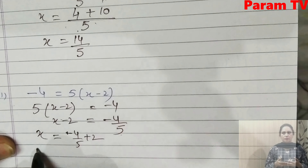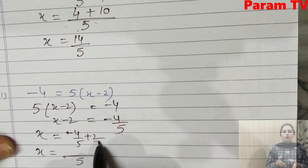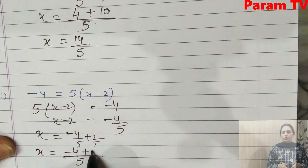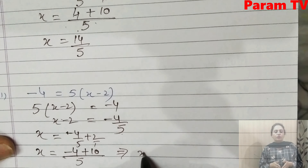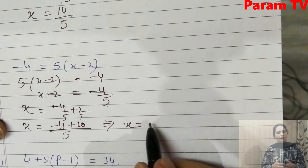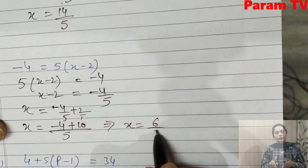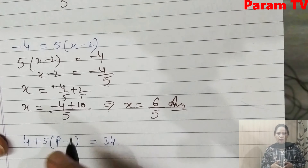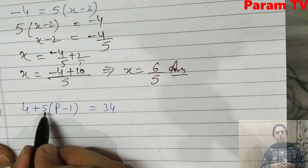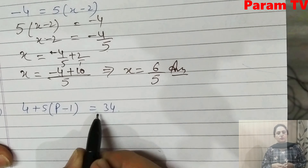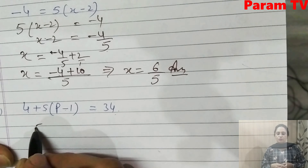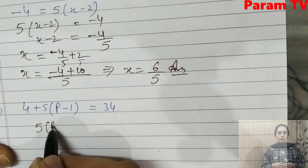Next part: 5(x - 2) = -4. So x - 2 = -4/5. Therefore x = -4/5 + 2. Taking LCM with denominator 5: x = (-4 + 10)/5 = 6/5. Since the positive term is greater, x = 6/5 is the answer.